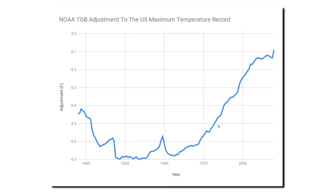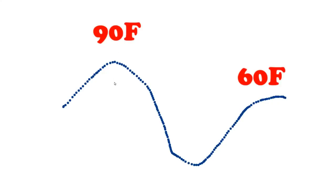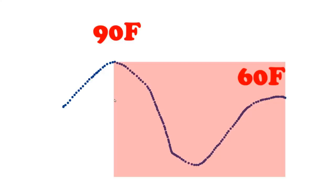First, I'm going to focus on the time of observation bias adjustment. This adjustment cools temperatures from the 1930s about 0.7 degrees Fahrenheit, and more recent temperatures are cooled about 0.1 degrees Fahrenheit. The theory is that back during the 1930s, most people reset their min-max thermometer during the afternoon. If you reset your thermometer at 90 degrees at 3 o'clock in the afternoon, and the second day is much cooler, the highest temperature during that 24-hour period records as 90 degrees for both days — double counting of hot days.